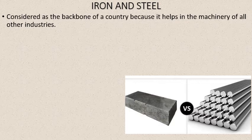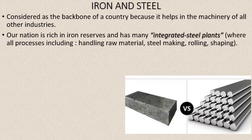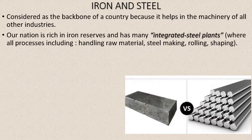Steel is considered the backbone of a country because it helps in the machinery of all other industries. When we discussed classification, remember primary industries — iron and steel. This is considered the primary industry because every other industry needs iron and steel for their machines and functioning. Our nation is rich in iron reserves and has many integrated steel plants.